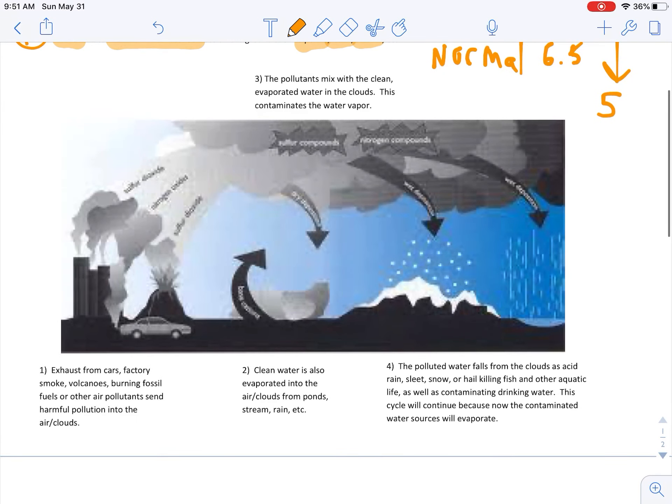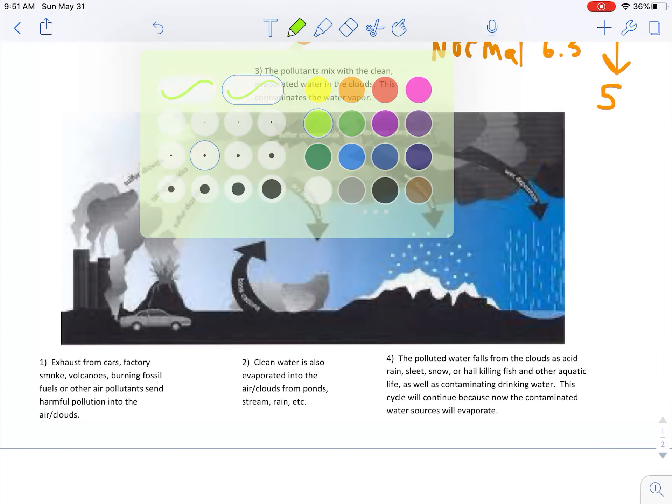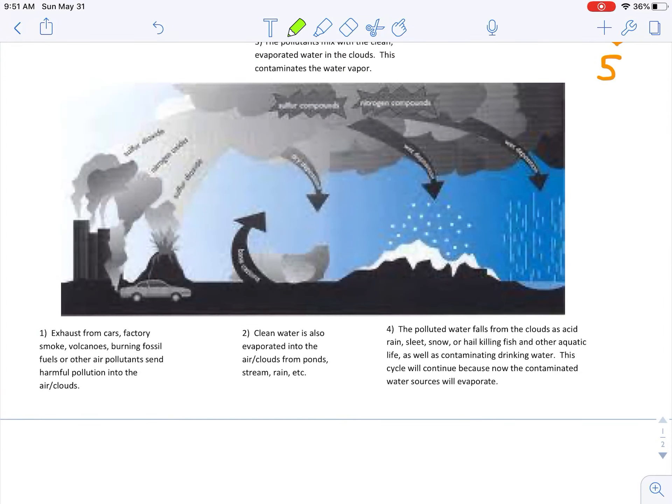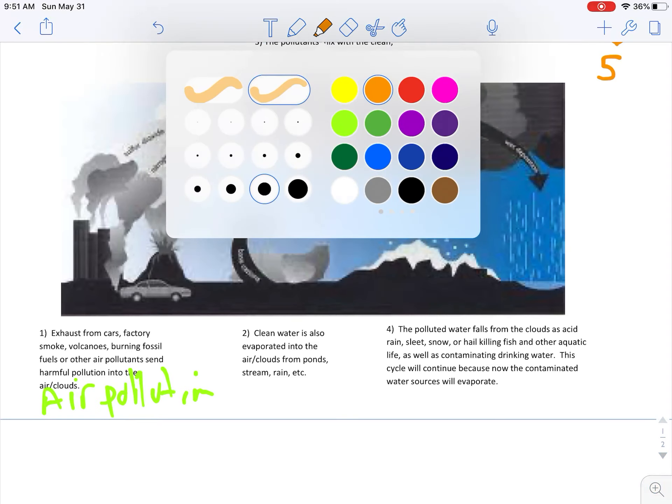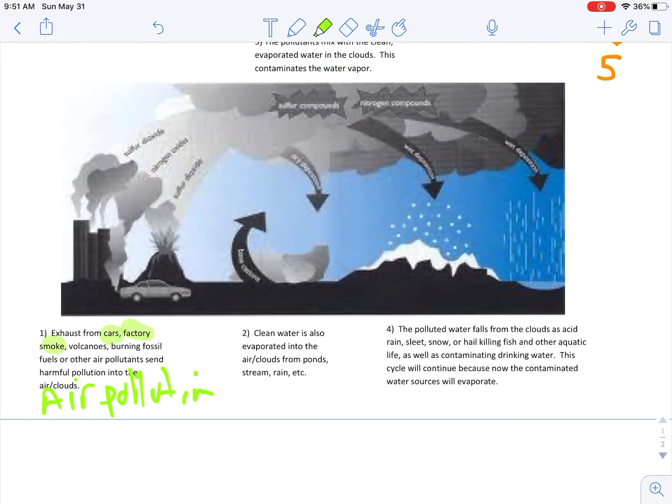So how does this occur? Well, there's a few different steps. First of all, you have air pollution. Now, where's the air pollution come from? It comes from cars, factory smoke, volcanoes, burning fossil fuels, or any other type of air pollutant. Where is step one? All these pollutants go into the clouds. They go up, they rise into the atmosphere. They rise up into the air.